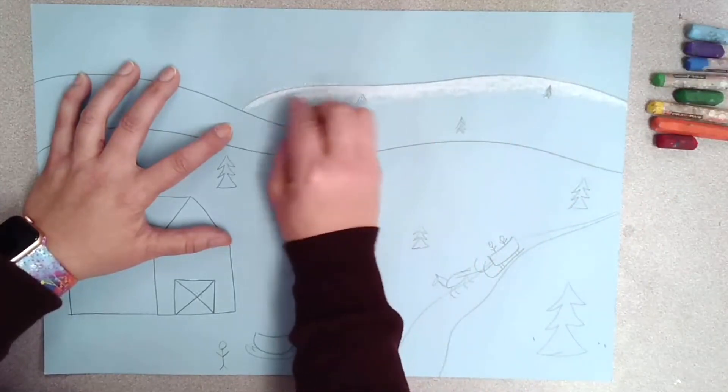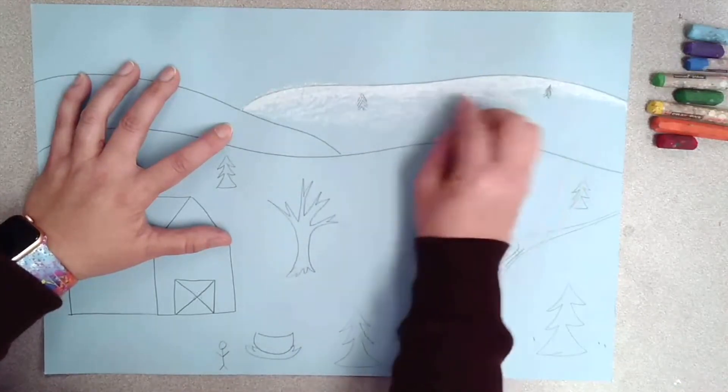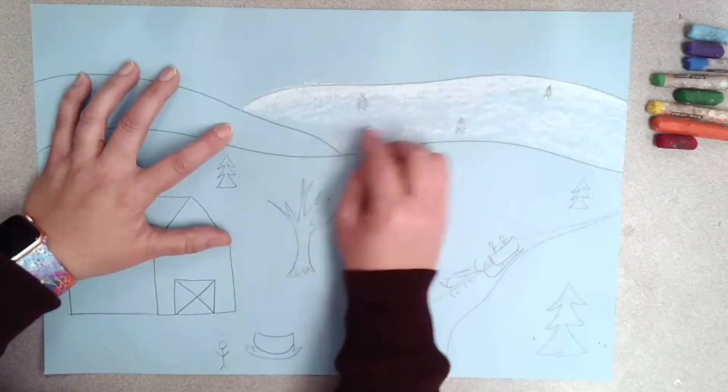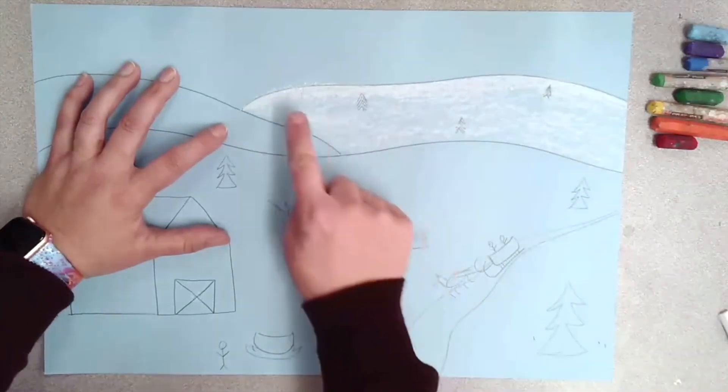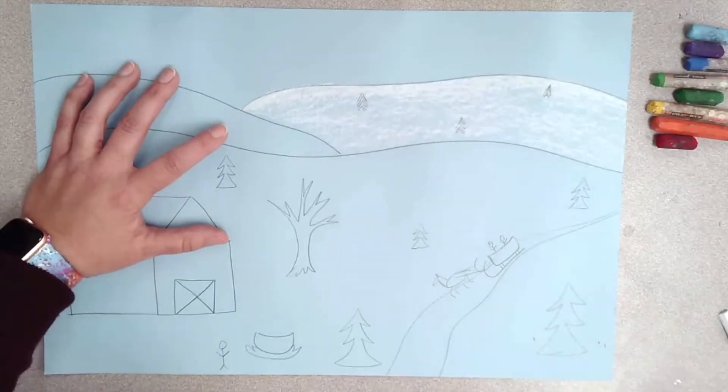You want it to be the whitest white it can be at the top of the hill and then gradually get lighter as you get to the bottom of the hill. Use the side of your chalk to do this and then use your finger to help smooth it out. It'll make your snow look nice and fluffy.